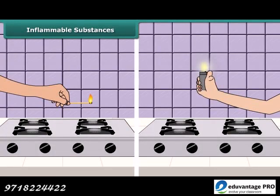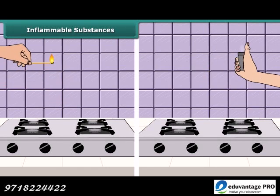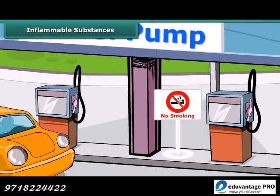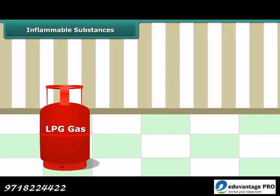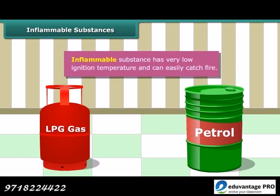Your mother would have told you to keep a burning matchstick or lighter away from the LPG gas stove in the kitchen, because LPG catches fire very easily. Similarly, you must have seen no-smoking signs at petrol pumps, because petrol also catches fire very easily. Substances like LPG and petrol are inflammable because they have a low ignition temperature, due to which they readily catch fire.